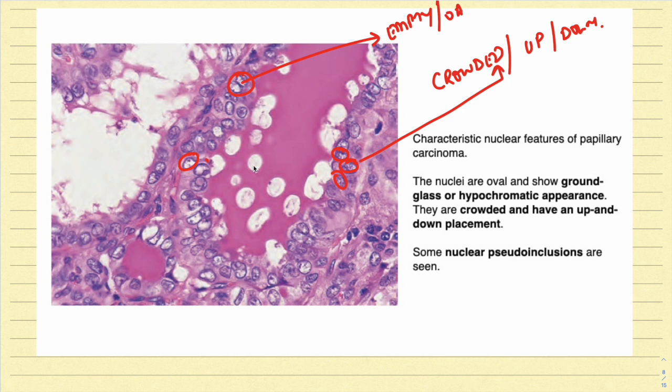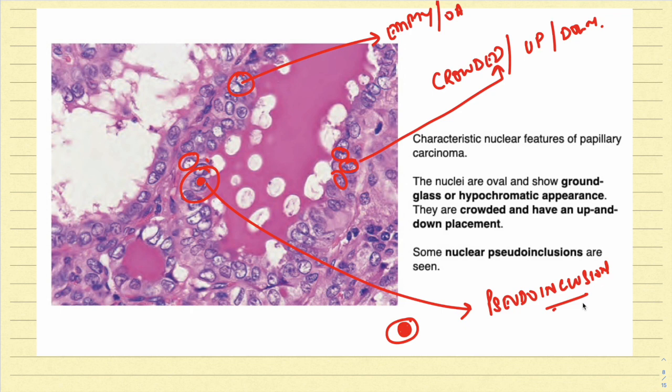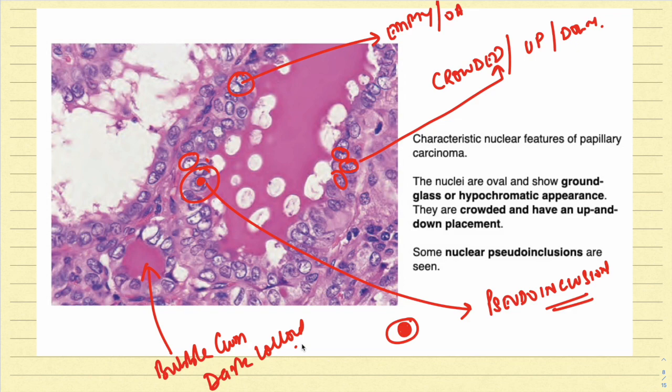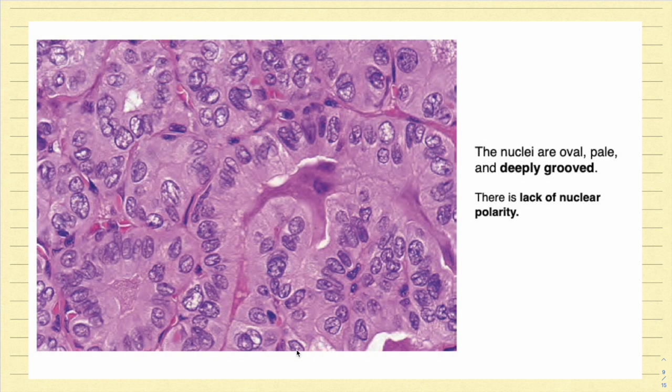Also, one important thing we can see: if you look at this diagram, inside the nucleus there is a pseudo nuclear inclusion. This is the pseudo nuclear inclusion we can appreciate here. It is called pseudo inclusion because this is not a true nuclear inclusion at all — it is actually an extension of the cytoplasm, which has invaginated inside. Characteristically, if you look at the colloid also, it is bubble gum-like dark colloid, as we can appreciate in this diagram.